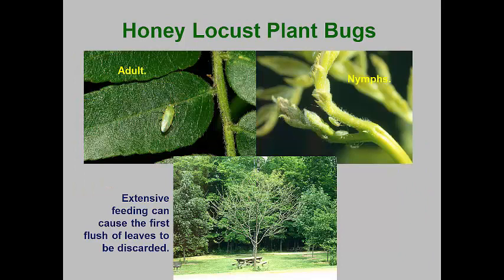The honey locust plant bug was generally considered to be a non-pest until thornless honey locust trees were introduced and began to be extensively used as urban landscape trees. This pest overwinters as eggs that have been inserted into the bark tissues of one to two-year-old shoots. As the new honey locust buds expand, the eggs hatch, and the tiny green nymphs are well camouflaged among the developing leaves. As the nymphs feed on the expanding leaves and leaf stems, the leaflets can curl and turn brown.